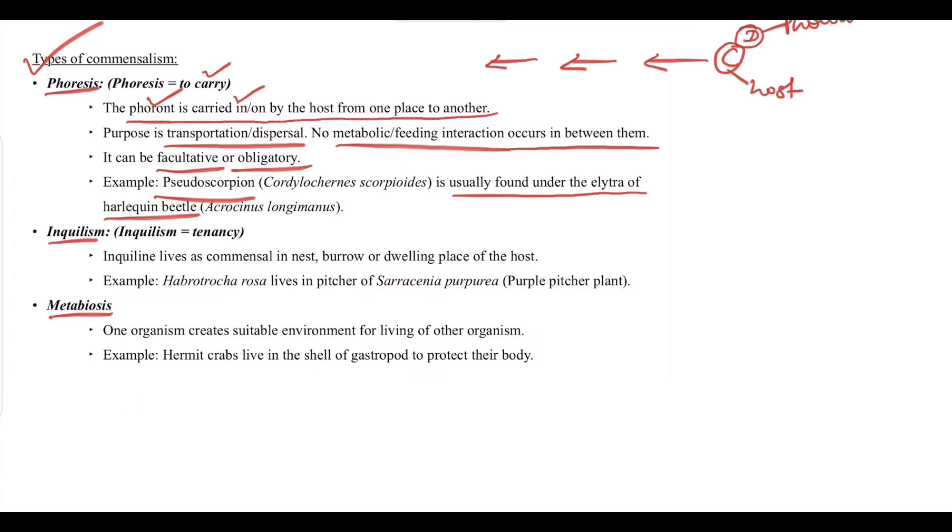Next we have inculism, which means tenancy. Inquiline lives as commensal in nest, burrow, or dwelling place of the host. Species F lives in the burrow of species E, that makes inculism. The inquiline lives as commensal in nest, burrow, or dwelling place of the host. For example, Hebrotrocharosa lives in the pitcher of Sarracenia purpurea, which is the purple pitcher plant.